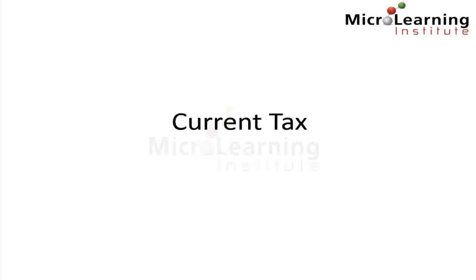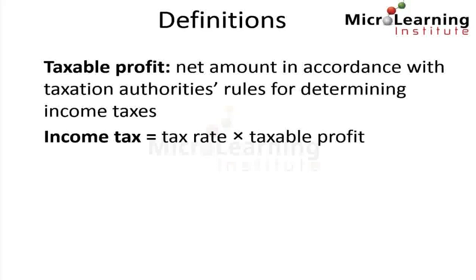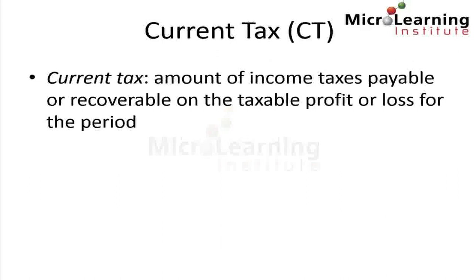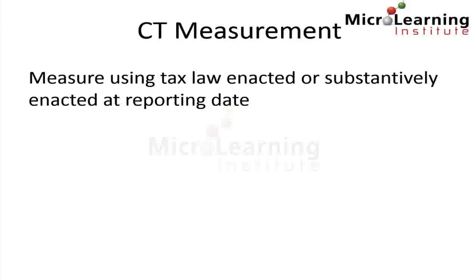Let's look at what IAS 12 says about current tax. IAS 12 defines taxable profit as the net amount in accordance with the Taxation Authority's rules for determining income tax. Equivalently, income tax is defined as the taxable profit multiplied by the tax rate. The current tax is defined as the amount of income taxes payable or recoverable on the taxable profit or loss for the period. We measure the current tax using tax law enacted or substantively enacted at the reporting date.